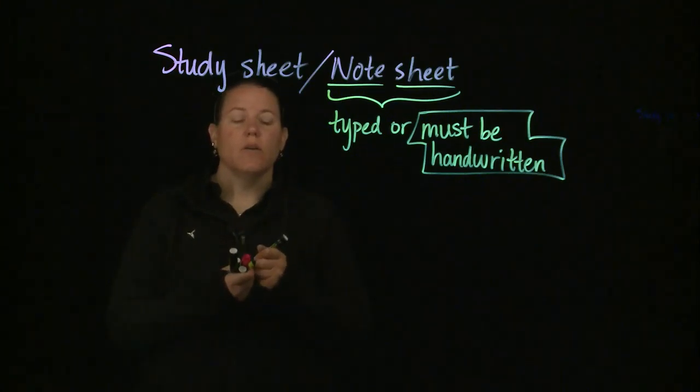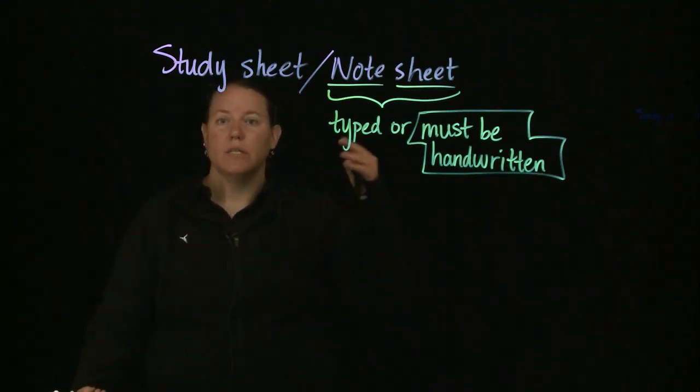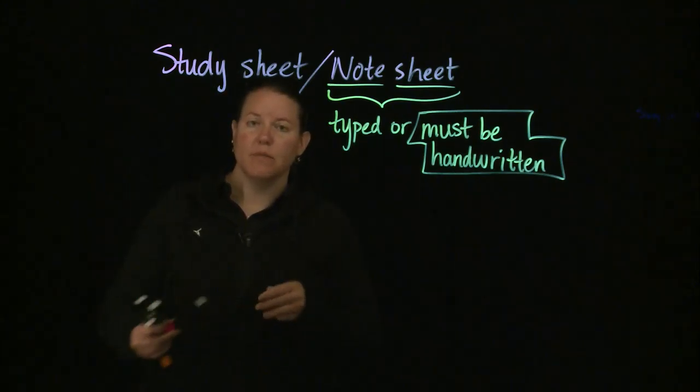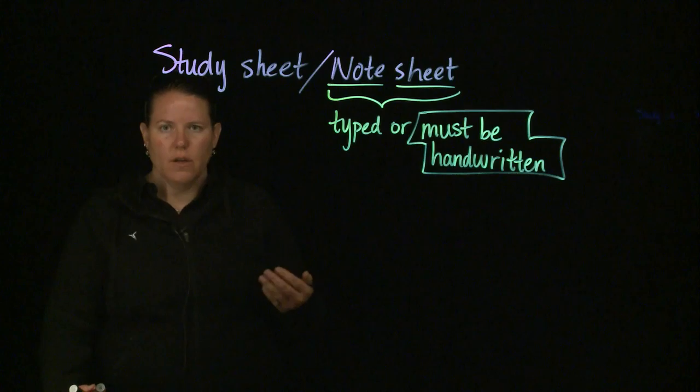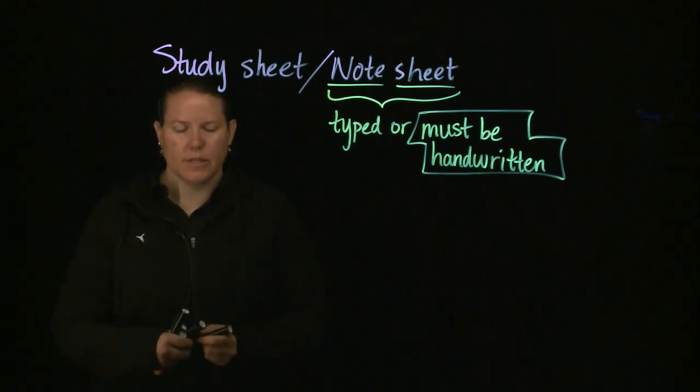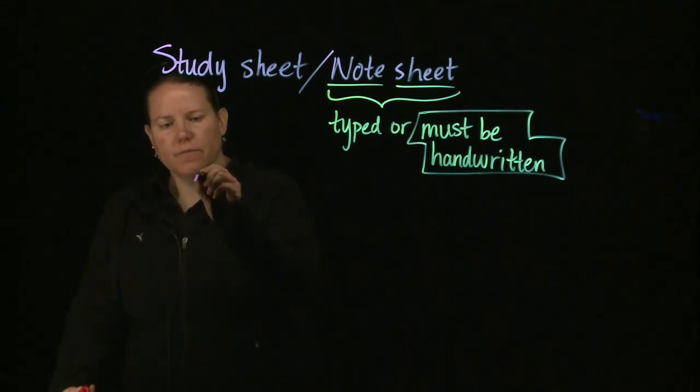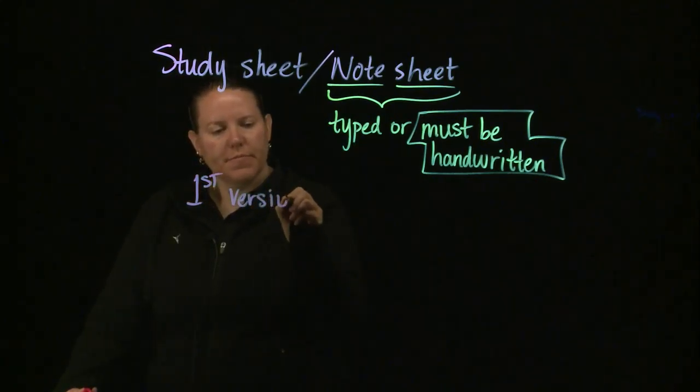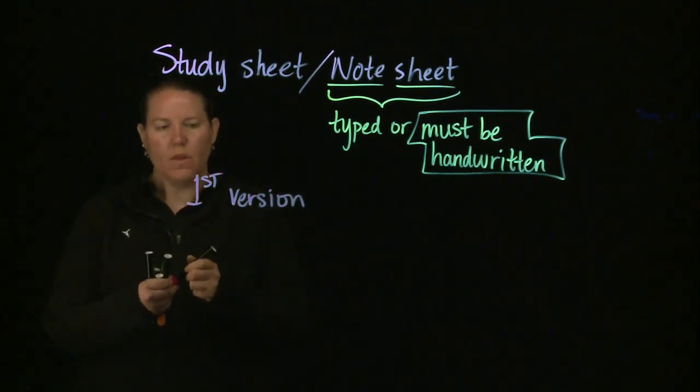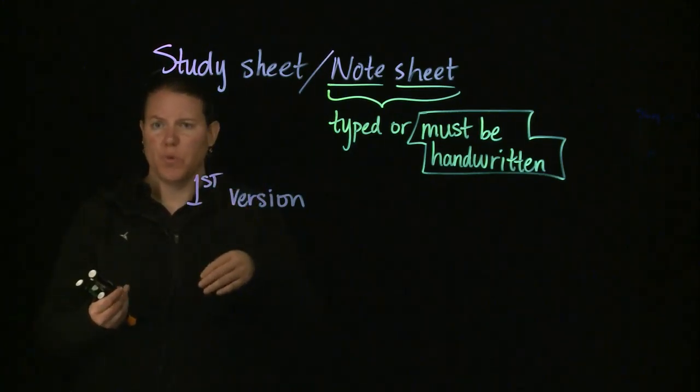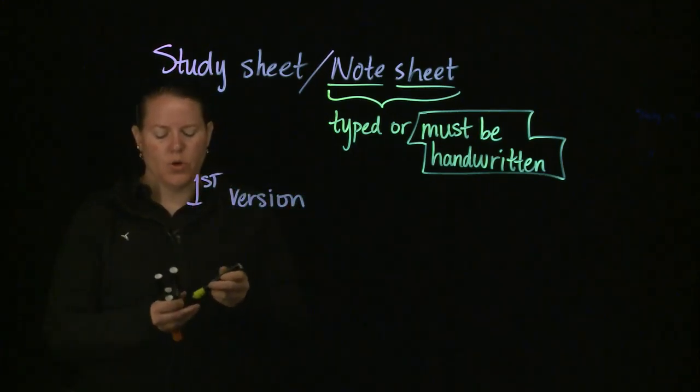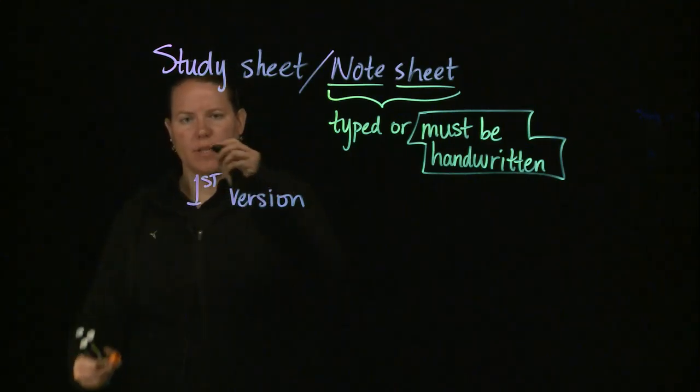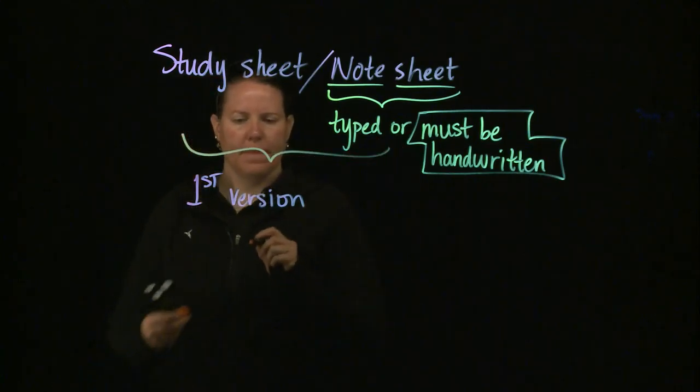The idea here is that you're going to go through several different iterations of this note sheet before you get to the one that you bring in the test, because in the midst of making the note sheet you are studying for the test. So, the first iteration, the first version of the note sheet. And this will be true for the study sheet as well. So these versions are true for both. There's going to be one thing that differs at the end.